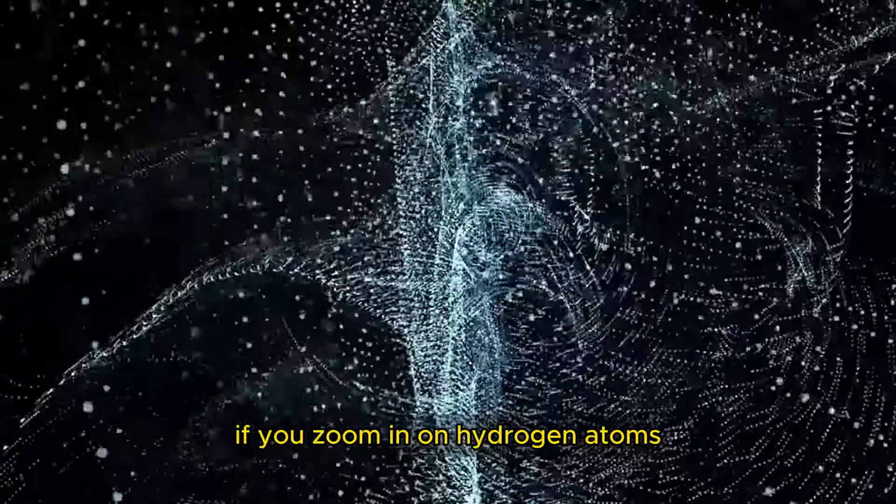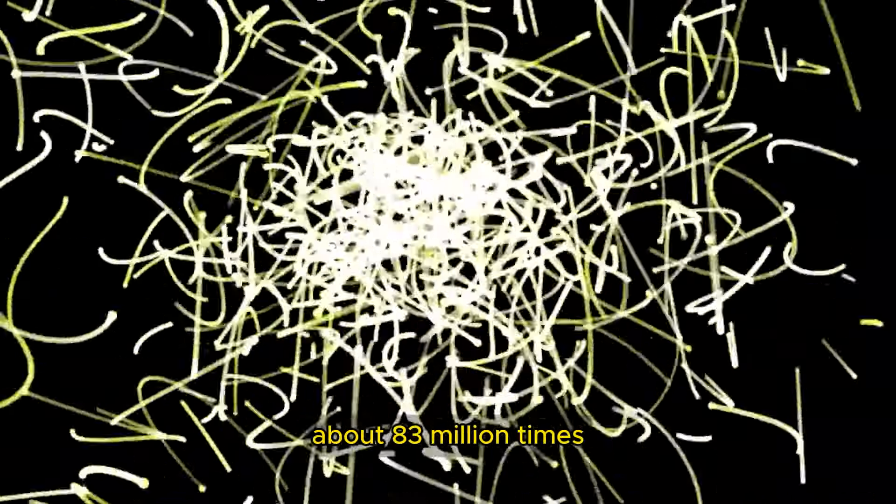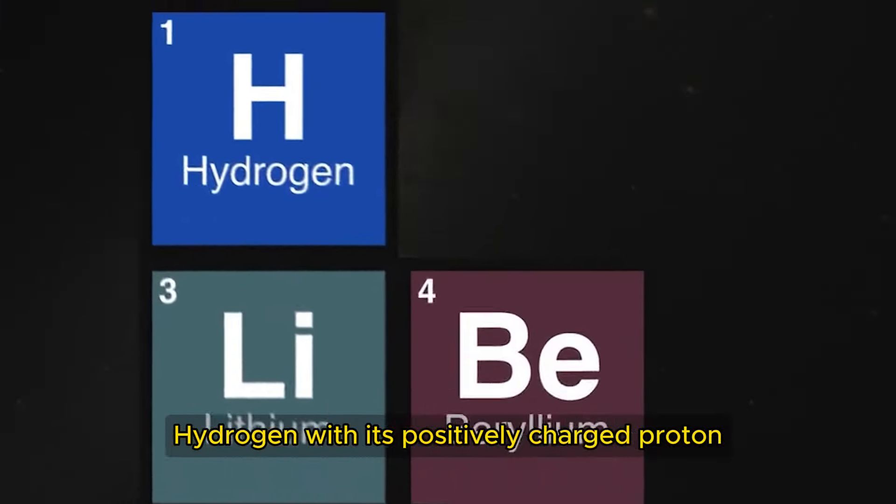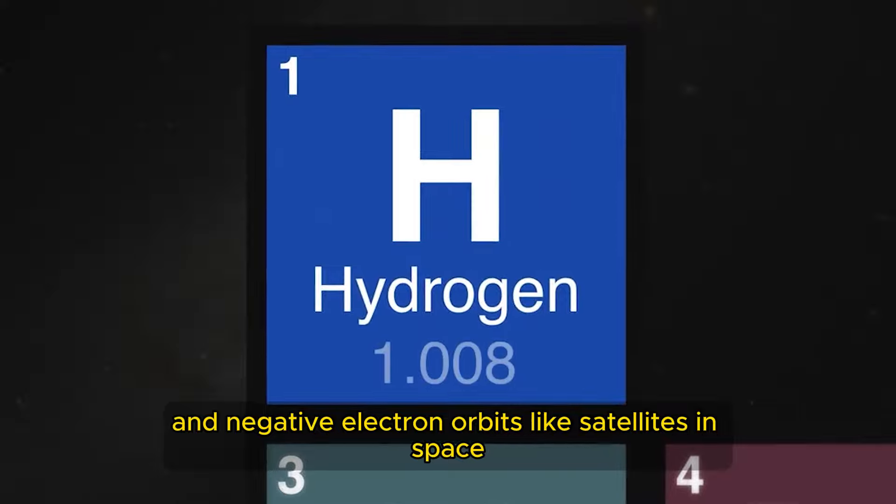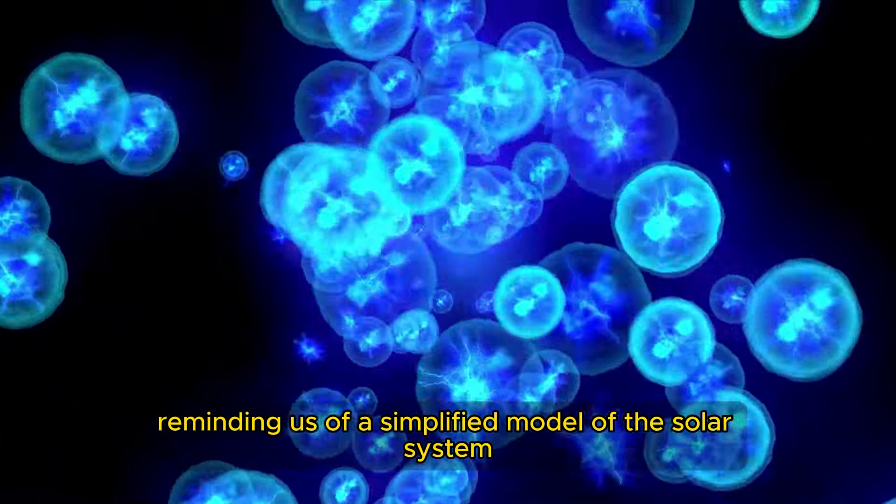If you zoom in on hydrogen atoms, you'll realize that they are incredibly small, about 83 million times narrower than the width of a fingernail. Hydrogen, with its positively charged proton and negative electron, orbits like satellites in space, reminding us of a simplified model of the solar system.